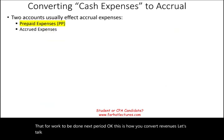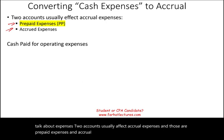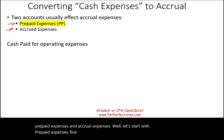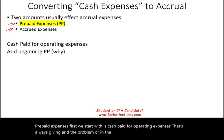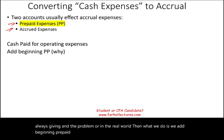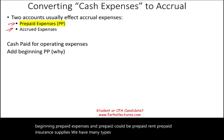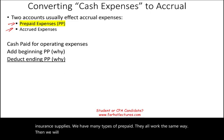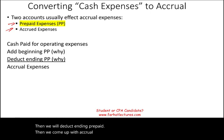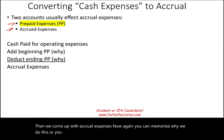Let's talk about expenses. Two accounts usually affect accrual expenses: prepaid expenses and accrued expenses. Starting with prepaid expenses — we begin with cash paid for operating expenses, which is always given. Then we add beginning prepaid expenses — prepaid could be prepaid rent, prepaid insurance, or supplies. Then we deduct ending prepaid to come up with accrual expenses. Again, you can memorize this or understand why.